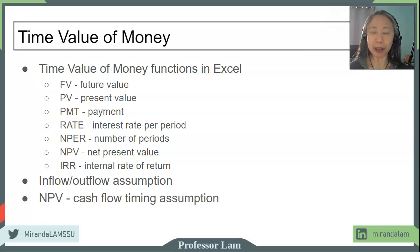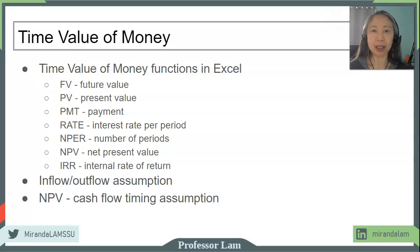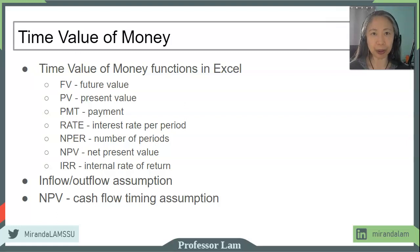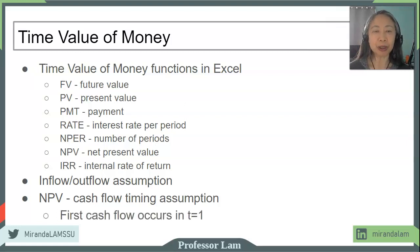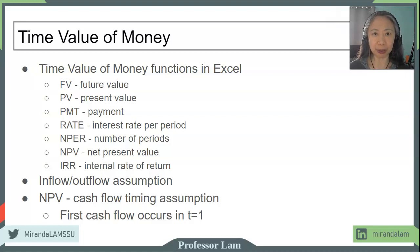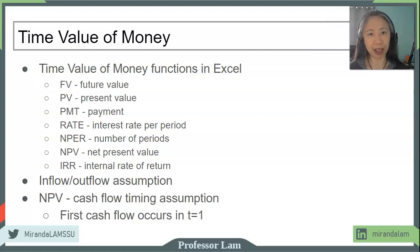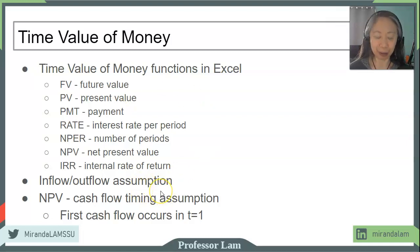Another thing I want to point out is the cash flow timing assumption in Excel's NPV function. The NPV function in Excel computes the net present value for a series of uneven cash flows. However, it assumes that the first cash flows occur at T equals one. So if you have cash flow in year zero and you include that in the NPV function, you end up with the wrong answer. So here are just a few overview points — we're going to practice all of this.